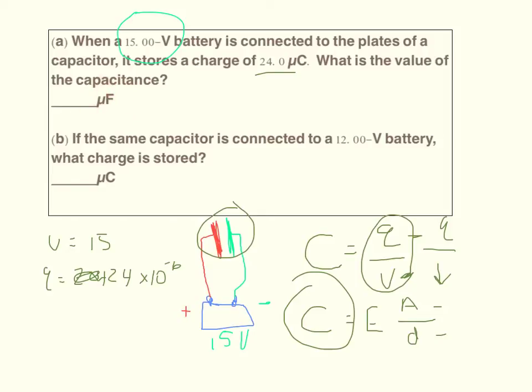Now let me point out really quick that it wants the answer in microfarads. So we don't actually have to convert 24 microcoulombs into coulombs. We could actually just use the number 24 and our answer would end up being in microfarads. So if you just plugged in that the capacitance is equal to 24 over 15 microfarads, then you would get that it's about 1.6 microfarads. So I'll just go ahead and write 1.6 right there.